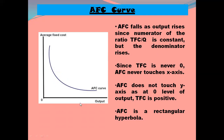AFC decreases throughout. Since TFC is never zero, AFC will never touch the x-axis. If it were to touch the x-axis, AFC would become zero, but we know AFC will never be zero because TFC is never zero — there is always a total fixed cost even if the output level is zero. Also, AFC does not touch the y-axis, because even at zero level of output TFC is positive, so AFC will not start from the y-axis either.